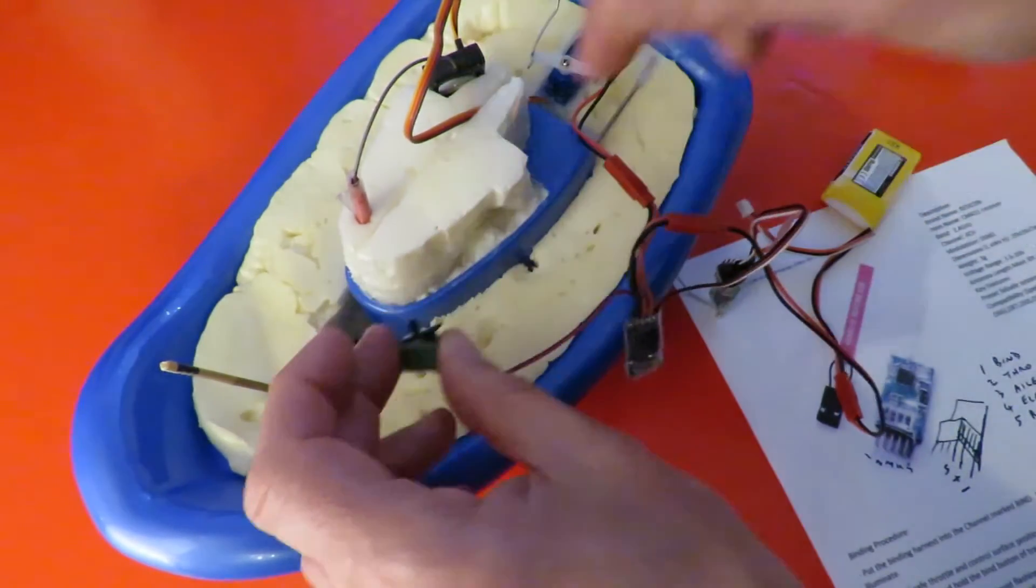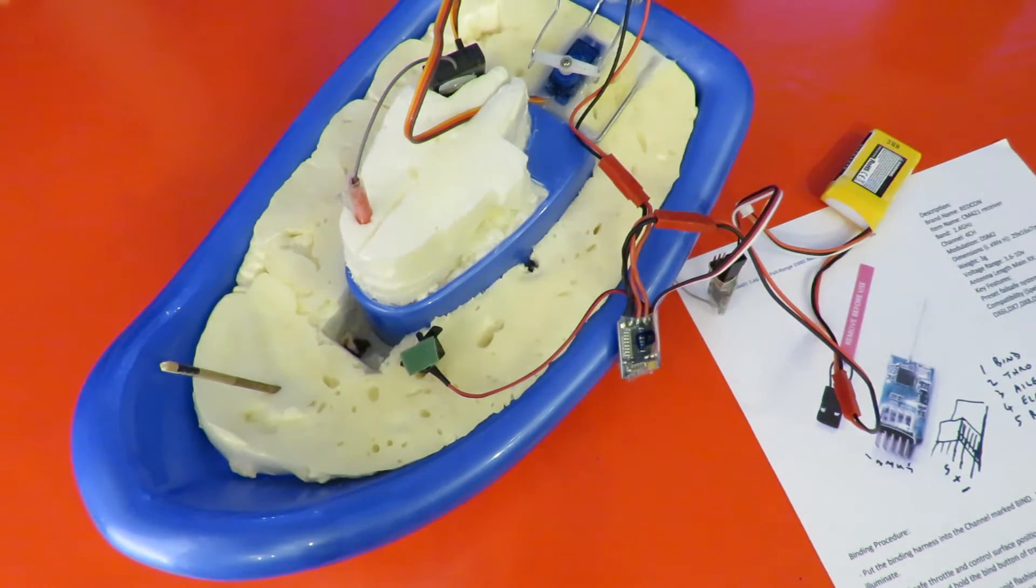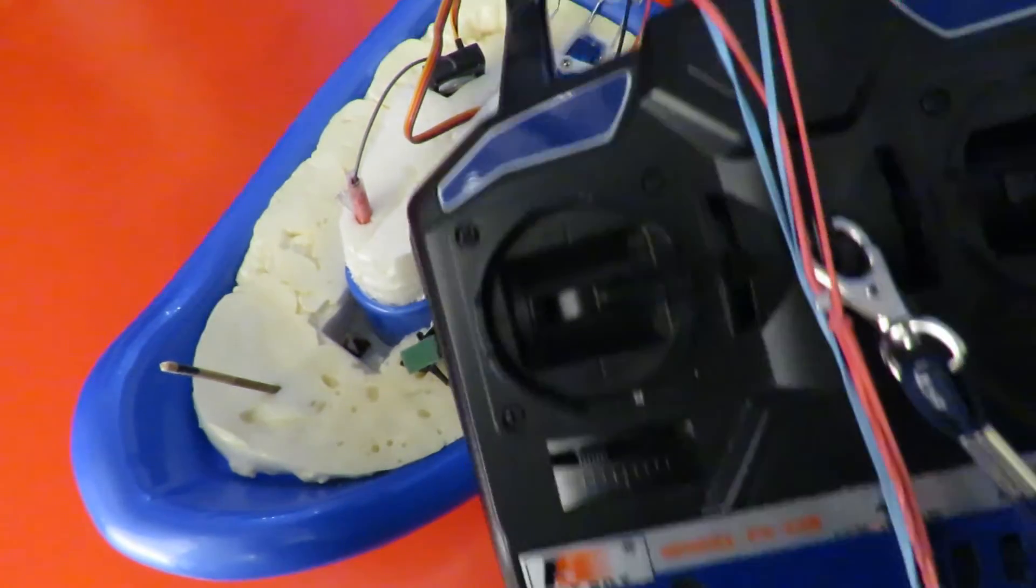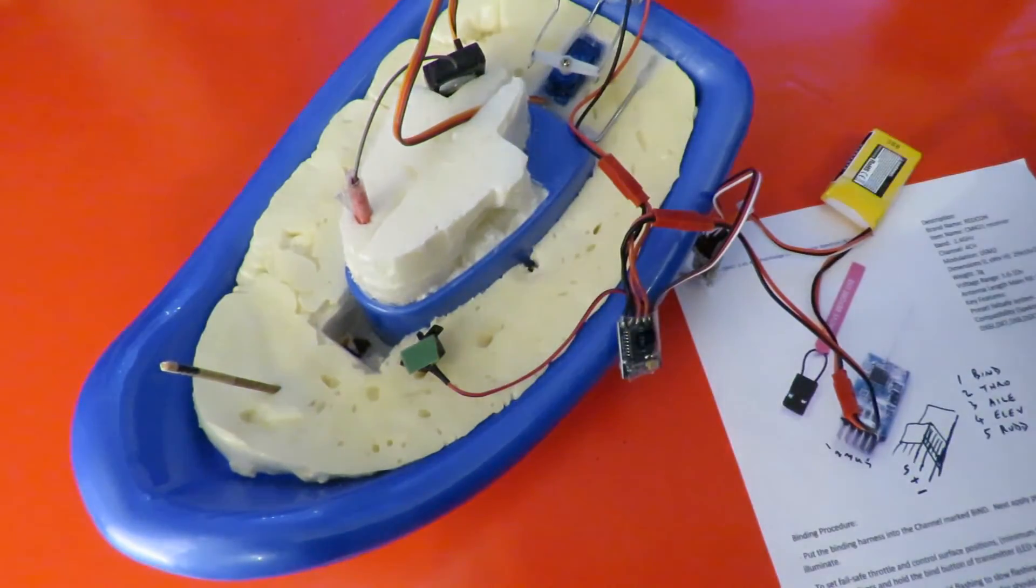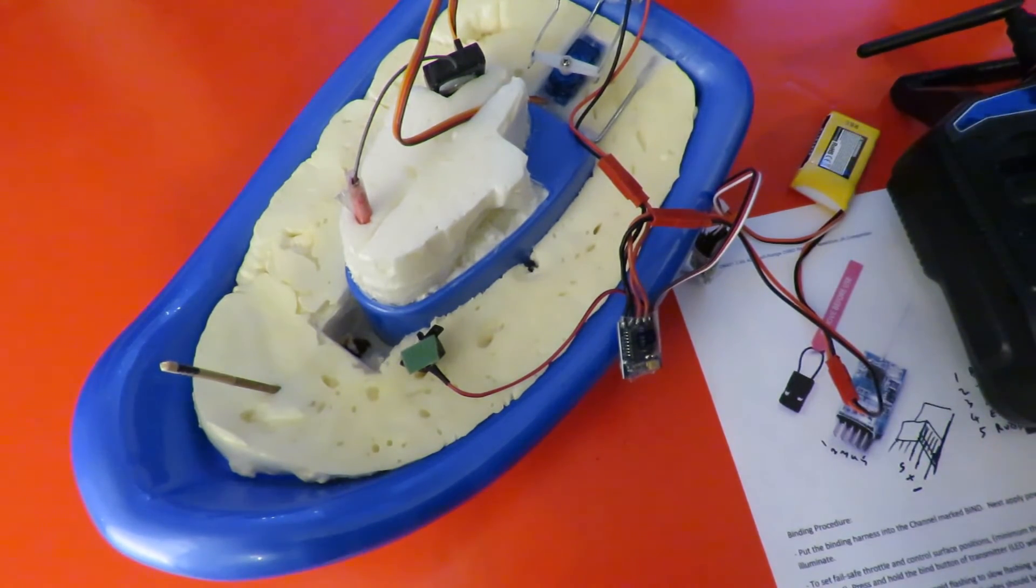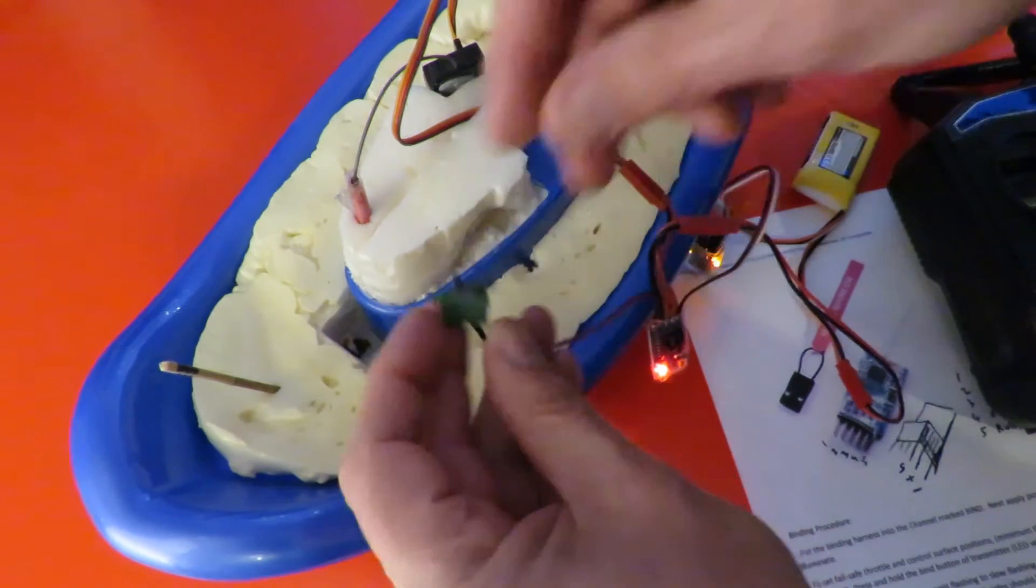So let's switch that off again and find a transmitter. I'll just try my normal Flysky FS T4B, switch that one on first. Press the bind button, switch it on. So we should be in binding mode with the transmitter. Power this thing on.